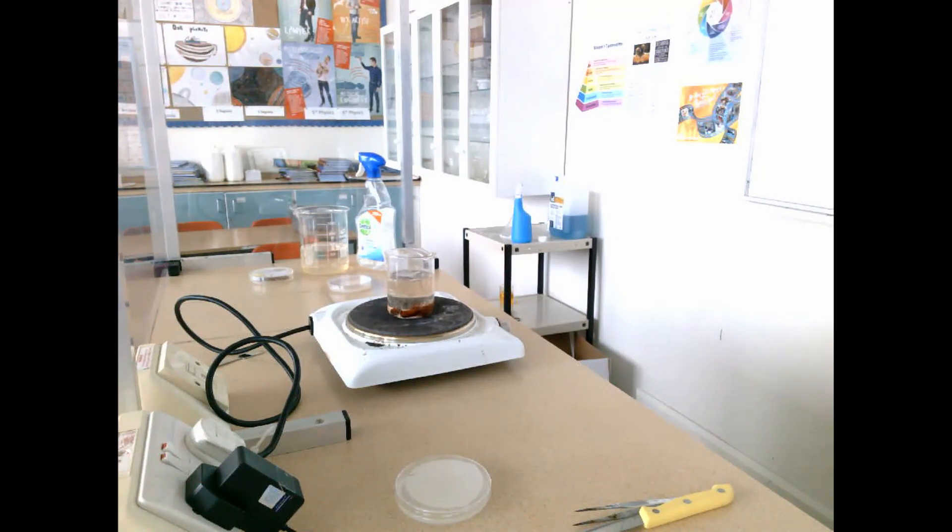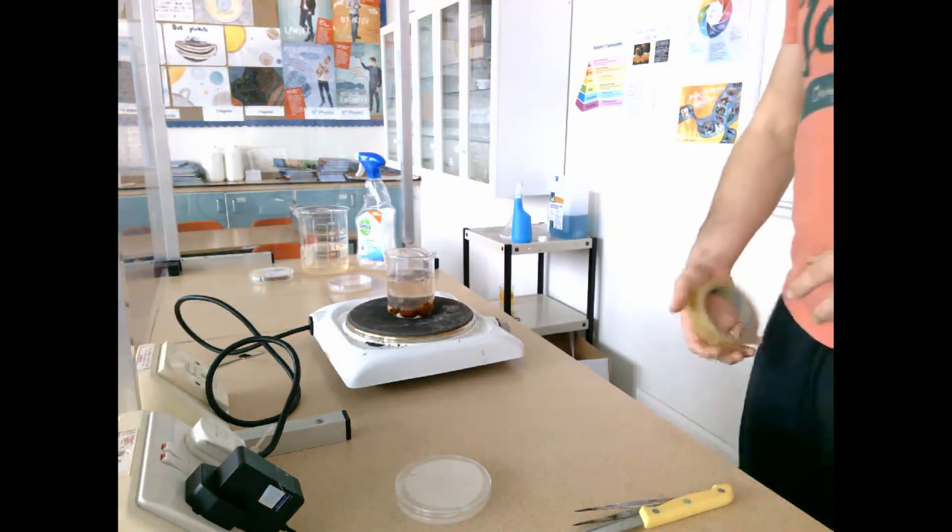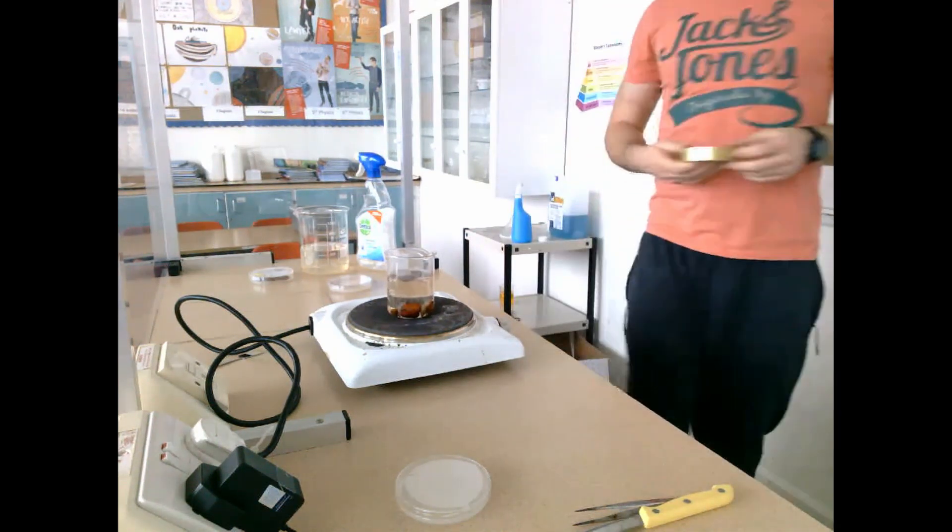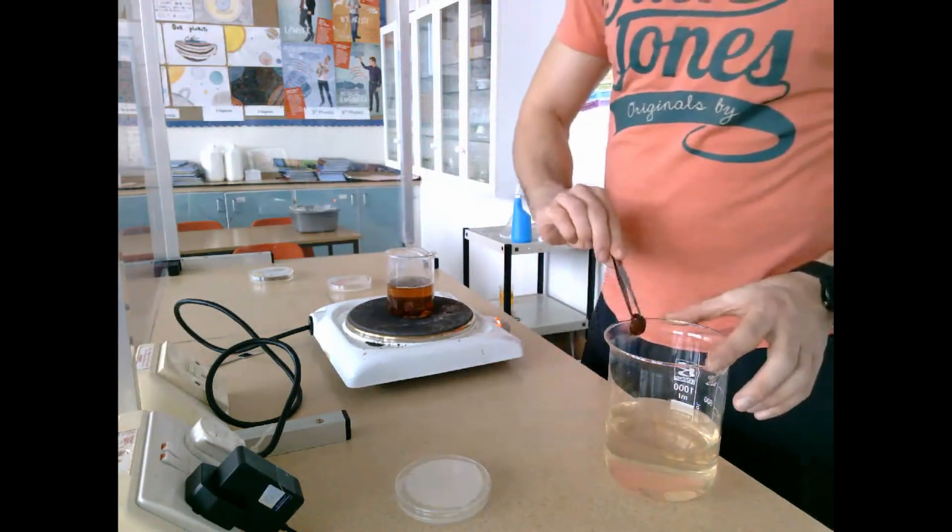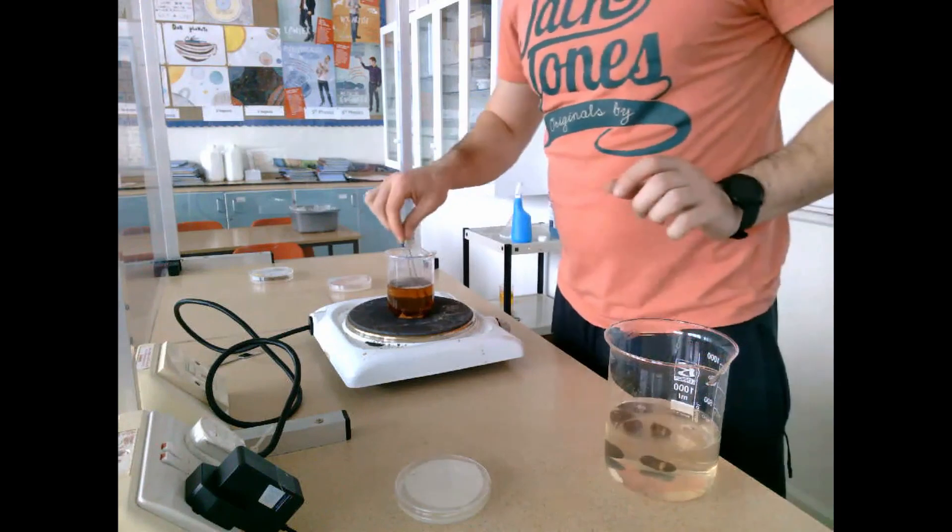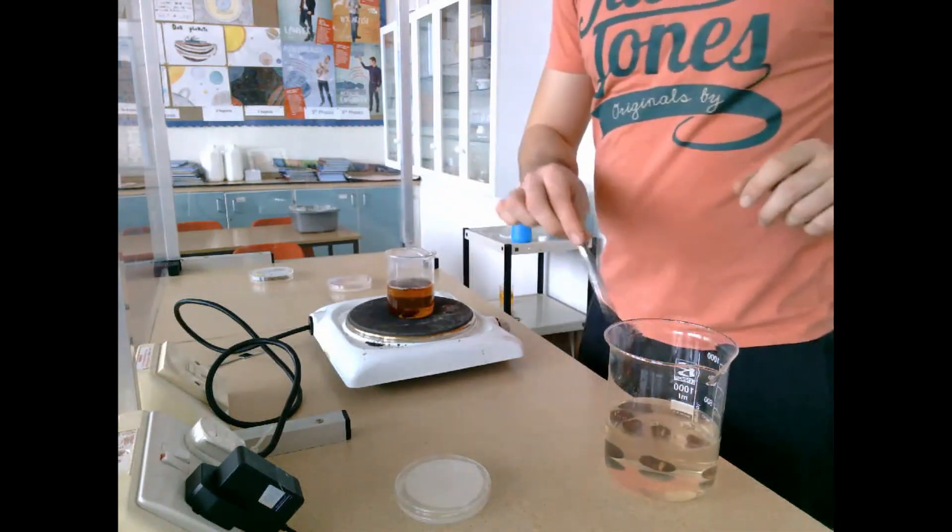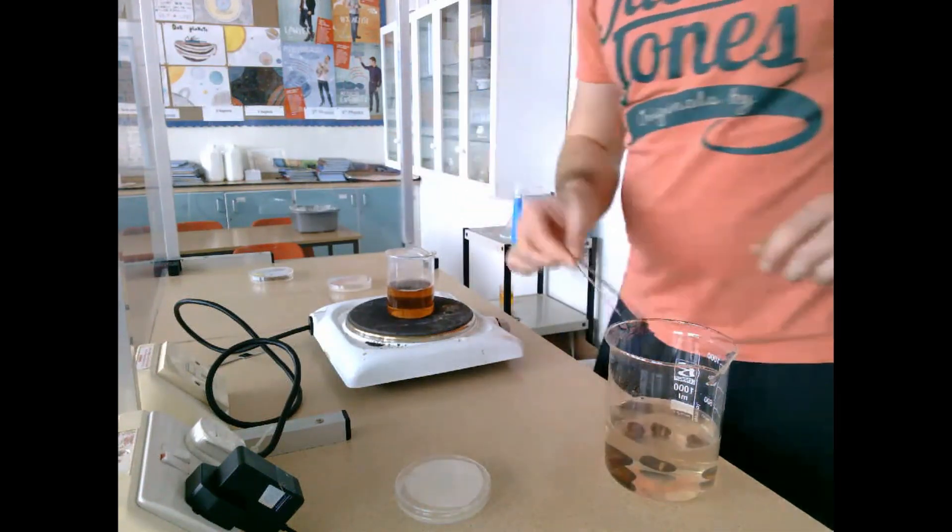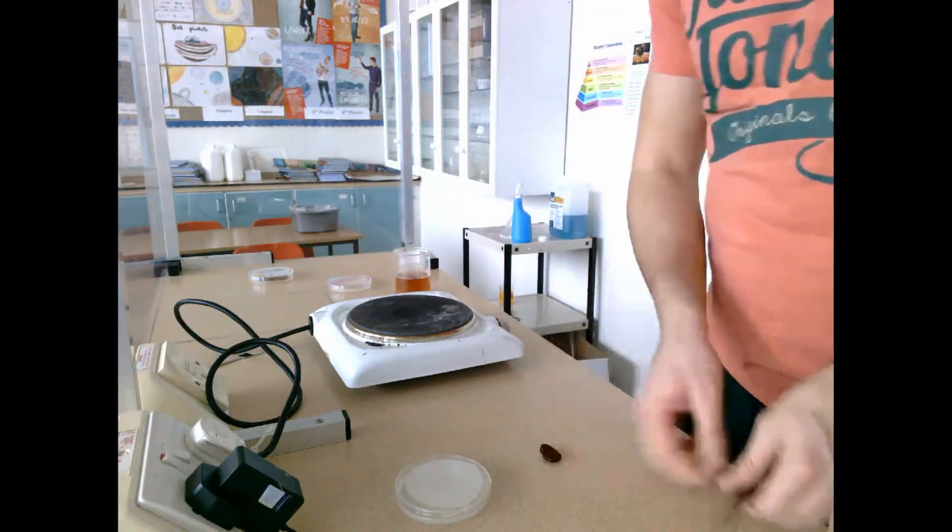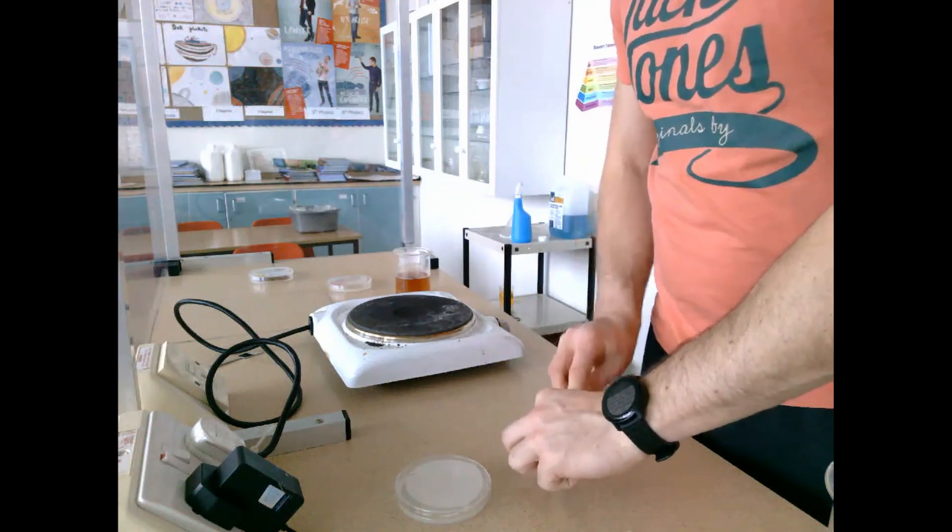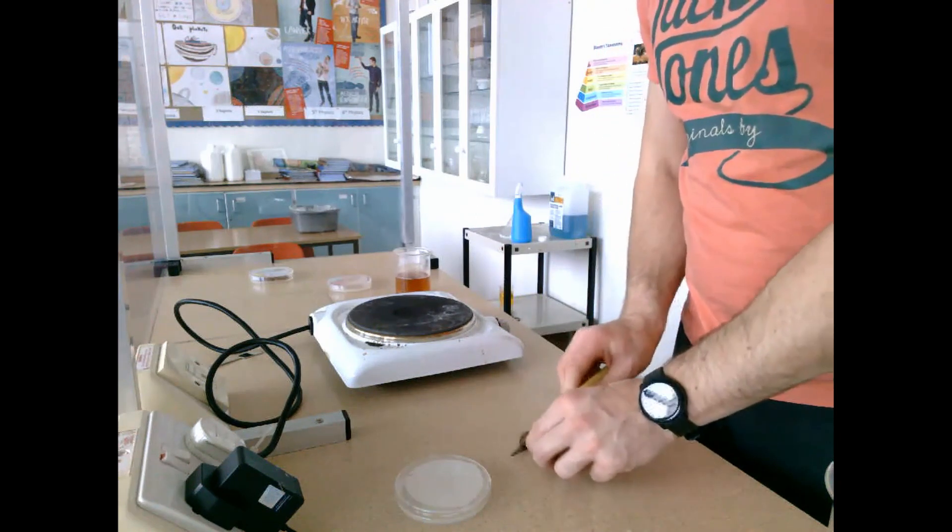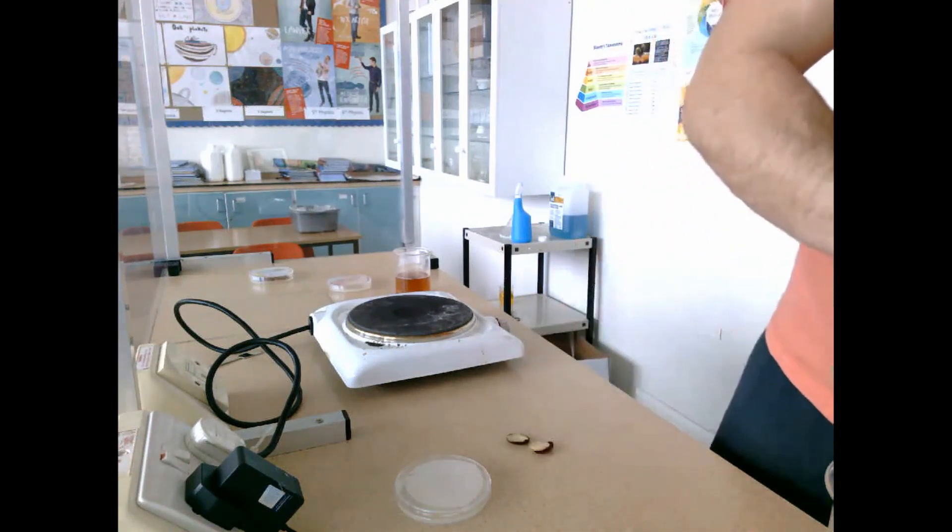The reason we denature the enzymes is to prove that digestive activity happens during seed germination. By killing these seeds and denaturing the enzymes, there should be no activity on the starch agar plate, but my experimental plate should show clear digestion. After 15 minutes, I take the seeds out and put them in a cool water bath to lower their temperature before cutting.